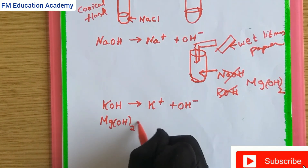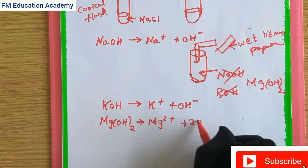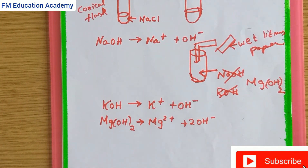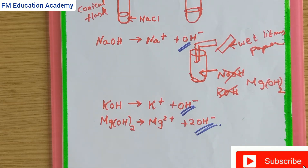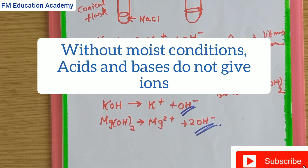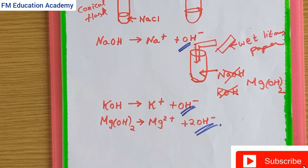We now test potassium hydroxide (KOH). When we bring a wet litmus paper near a KOH solution, we observe that KOH dissociates to form K+ and OH- ions. Similarly, with magnesium hydroxide (Mg(OH)2), a wet litmus paper brought near the solution shows that magnesium hydroxide also dissociates to form Mg2+ and 2 OH- ions.